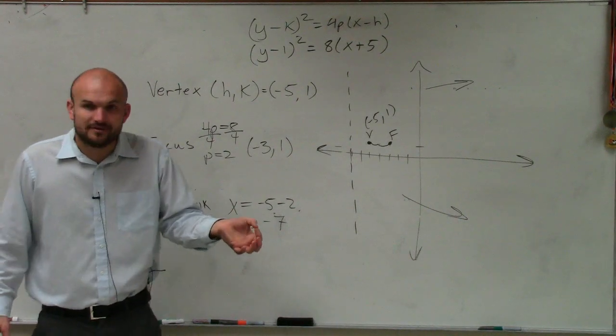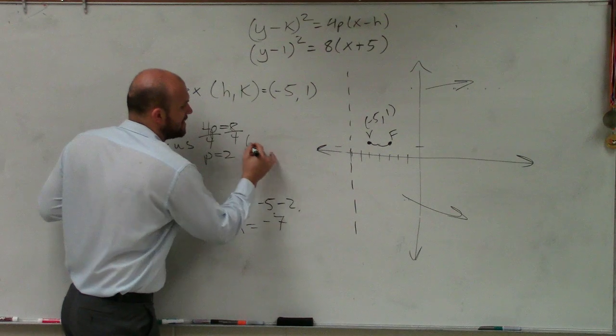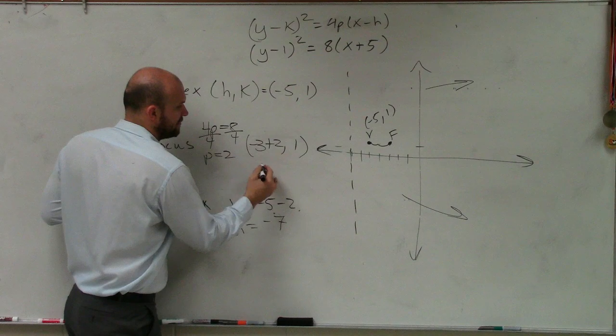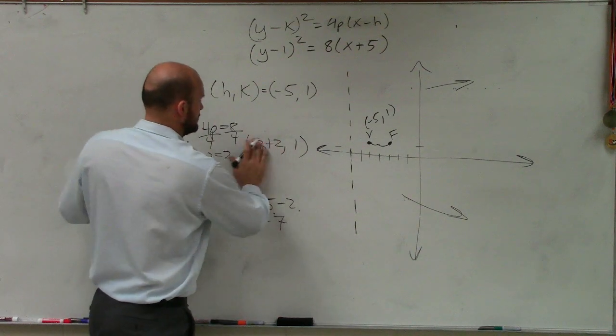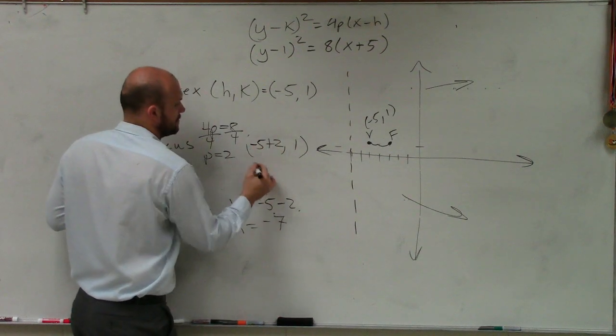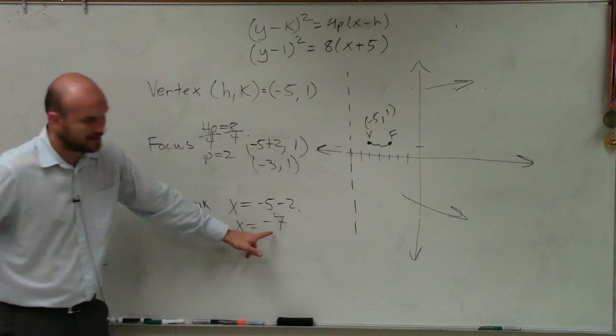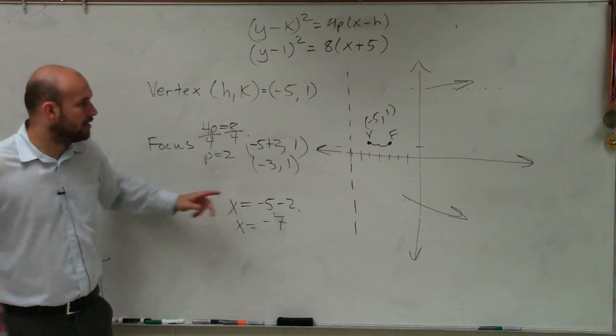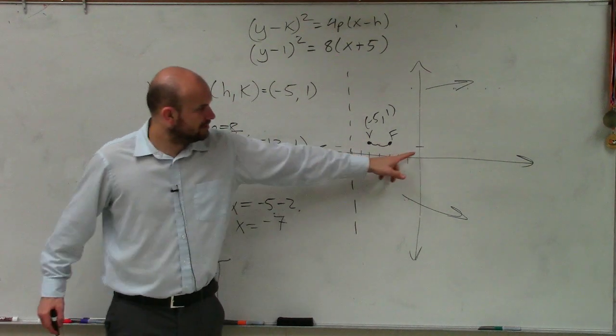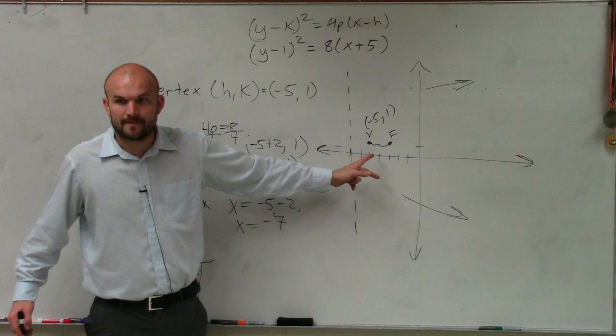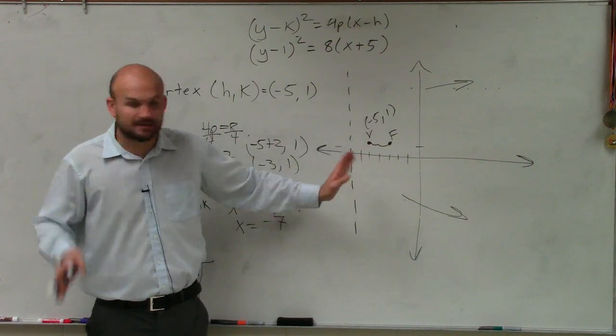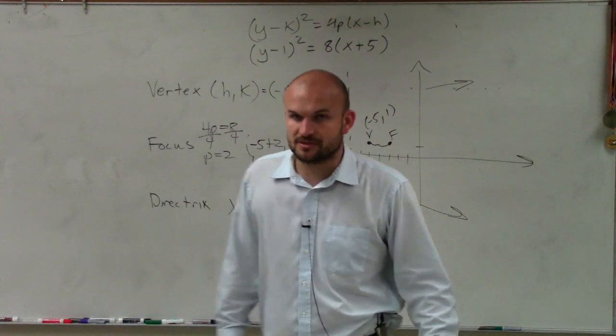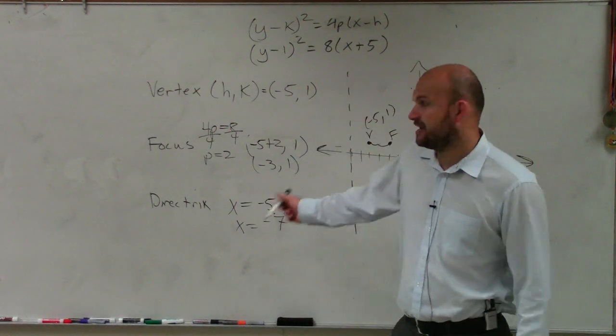Remember, p is positive. So let me write it like this. p is positive. The focus is at (-5 + 2, 1), which is (-3, 1). The directrix, it is x = -7. This is at -5. No, but remember, it's a line. The directrix is a line. So you've got to make sure you write it as a line: x equals -7. Anybody have any questions on this?